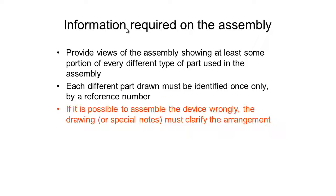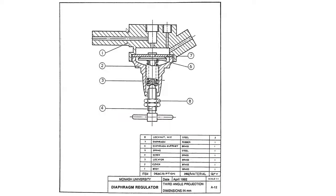Our next point is if it's possible to assemble a device wrongly, the drawing or special notes must clarify the arrangement in a way that it is not possible from the drawing to assemble the device incorrectly. First, if we look at these nuts again, if you think about a nut it can go on two ways: you can put it up one way or you can rotate it 180 degrees and put it on the other way.